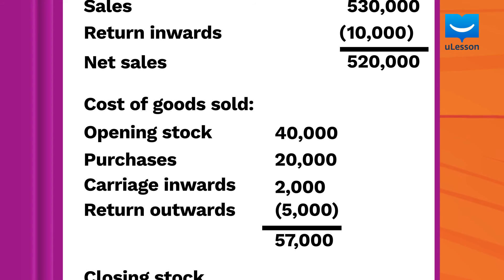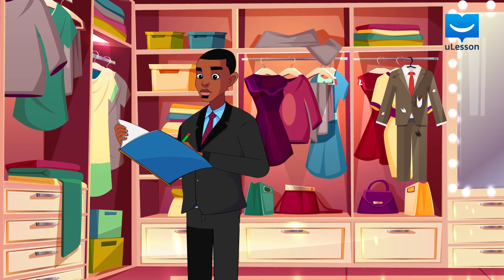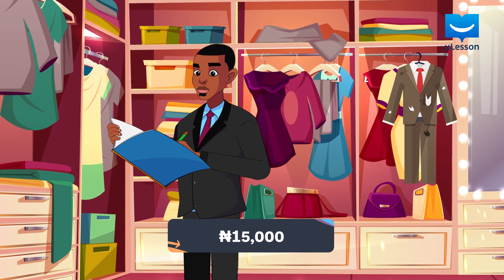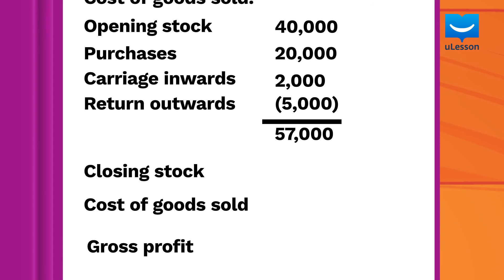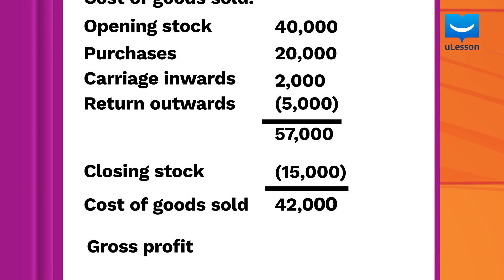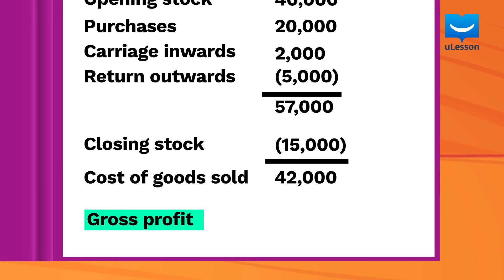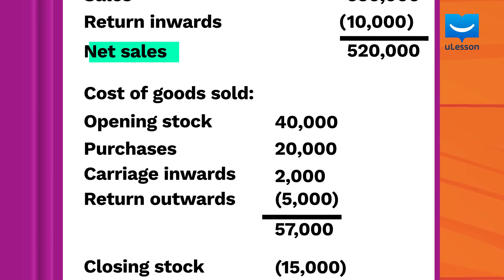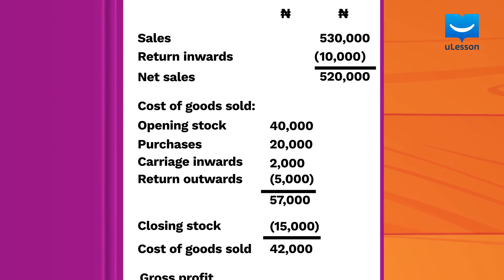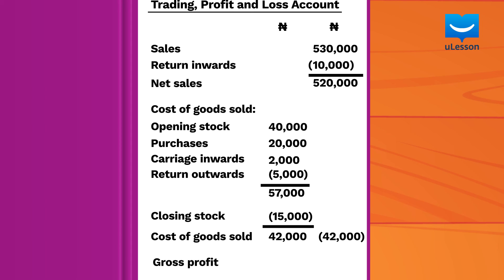Now, at the end of the year, Tano counted the remaining stock to be 15,000 Naira. This means that the remaining stock is the cost of goods sold. This would be 57,000 Naira minus 15,000 Naira. The cost of goods sold is 42,000 Naira. To get the gross profit, the cost of goods sold is deducted from the net sales. So, 520,000 Naira minus 42,000 Naira equals a gross profit of 478,000 Naira.